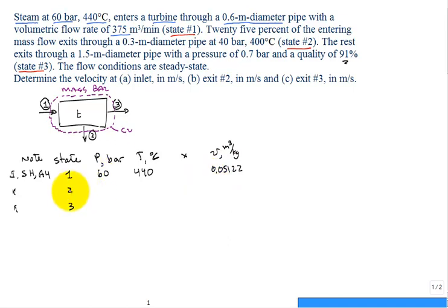So at state two, what do we have? We have a pressure of 40 bar and a temperature of 400 degrees C. We check, and yes, it's superheated. And we would use table A4 to get the property of a specific volume. And it's 0.07341. If you compare those two numbers, the specific volume at state two is greater, indicating it needs more room, more volume for each kilogram of that steam at state two.